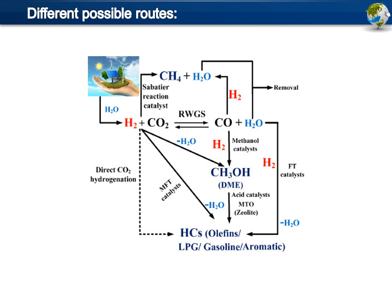In the indirect route, it involves methanol as an intermediate — this is the methanol-mediated pathway — which then gives hydrocarbons. There is also another reaction in which CO2 is directly converted to methane using the Sabatier reaction catalyst. All these direct and indirect routes utilize some kind of catalyst.